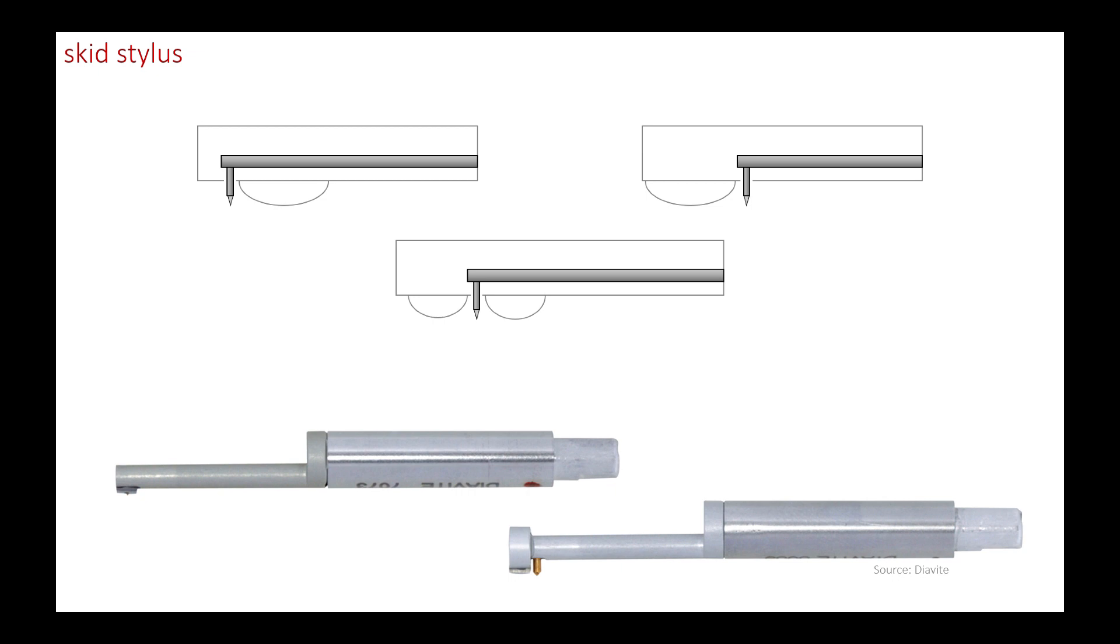As we mentioned above, some profilometers are equipped with a skid. The principle is to have a wide pad in contact with the surface to serve as a reference. This pad smooths the local roughness, allowing the tip to register the differences between this smooth form and the actual relief, thus approximating the roughness.